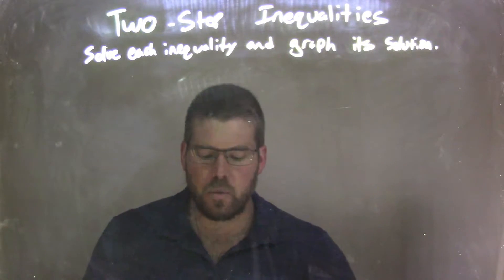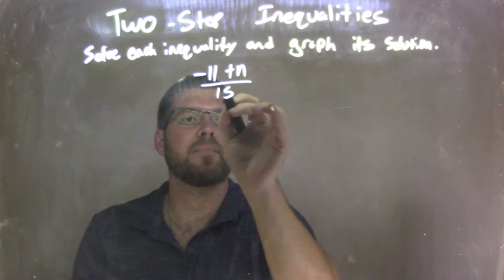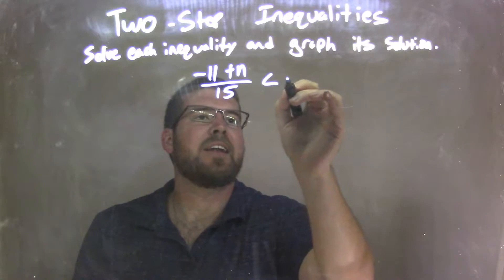So if I was given this inequality: negative 11 plus n, all over 15, is less than negative 1.